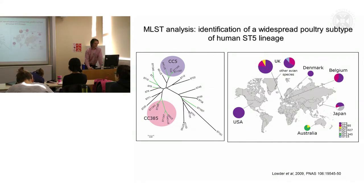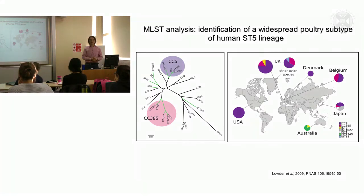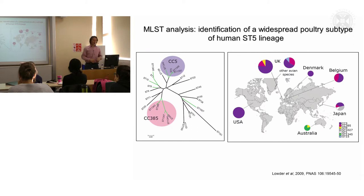The ST5 strains are indicated here in purple. However, in Australia we don't find any of these ST5 strains, and this may be related to the fact that until the 1990s there was a very strong blockade on livestock import into Australia, which may be why they seem to have their own set of poultry Staph aureus strains.